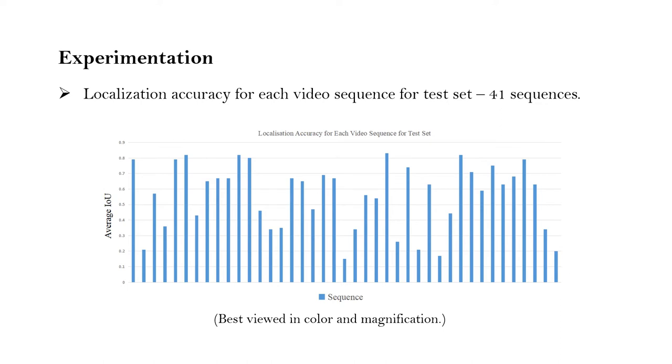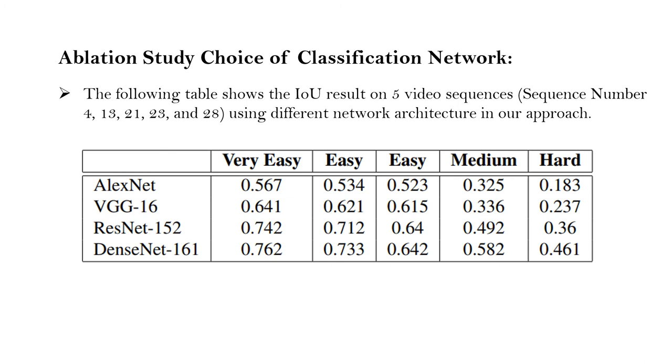We perform one of the ablation experiments by using different networks for five sequences for the different categories, respectively, as sequence number 4, 13, 21, 23, and 28, which are considered to be very easy, easy, easy, medium, and hard respectively.